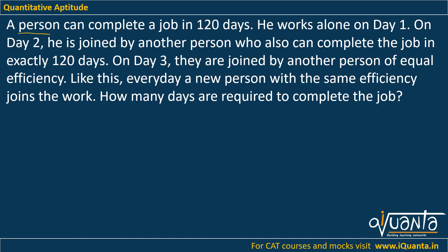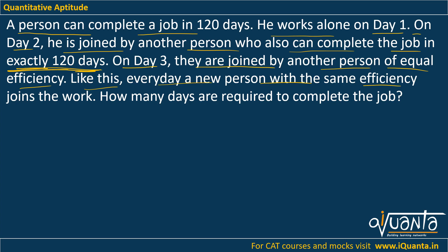The question is: a person can complete a job in 120 days. He works alone on day 1. On day 2 he is joined by another person who also can complete the job in exactly 120 days, so the second person has the same efficiency. On day 3 they are joined by another person of equal efficiency. Like this, every day a new person with the same efficiency joins the work. How many days are required to complete the job?